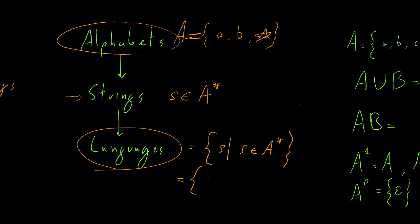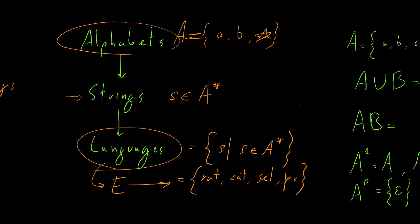For example, a language defined on strings from the English alphabet — let's call it A. Some language E might contain: rat, cat, set, PC. This is a language because it contains strings. So you can have finite languages like this, containing a finite number of elements, or you can have infinite ones. It's like a normal set.